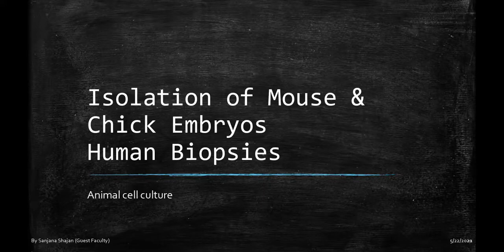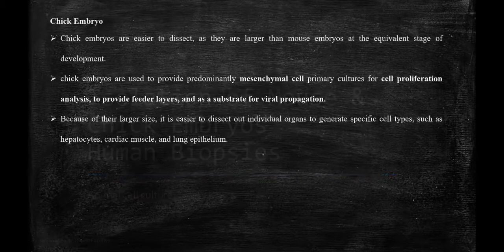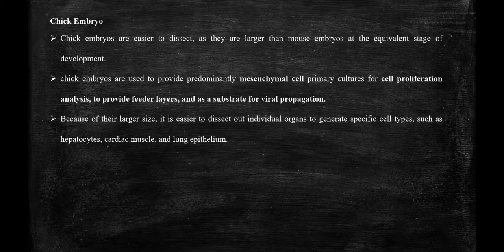Hey sweetest potatoes, today we are going to study the isolation of mouse and chick embryos and also human biopsies. Chick embryos are very easy to dissect, they're larger than mouse embryos, and are mainly used for mesenchymal cells, primary culture, and cell proliferation analysis.